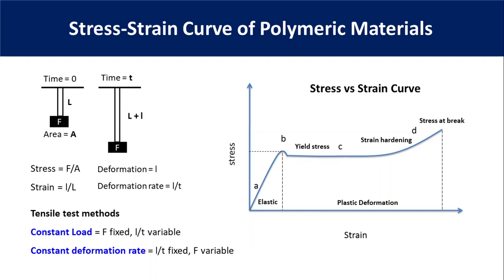In the elastic region, stress increases linearly with strain, indicating the material's resistance to deformation. A stiff material will have very high resistance to deformation compared to a soft material, so it will have a high ratio of stress to strain. At a certain stress level known as yield stress — point B in the picture — the material's resistance to deformation decreases and it can be easily deformed. Beyond this, strain increases without increasing stress. At higher strain levels, polymer resistance increases again and higher stress is required — this is known as strain hardening. Finally, the material breaks at a stress value higher than the yield stress.